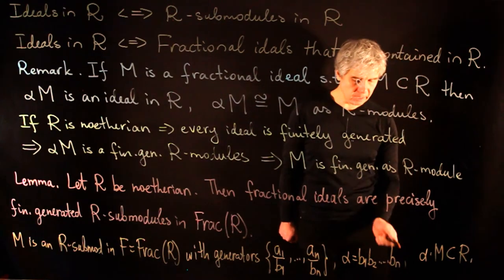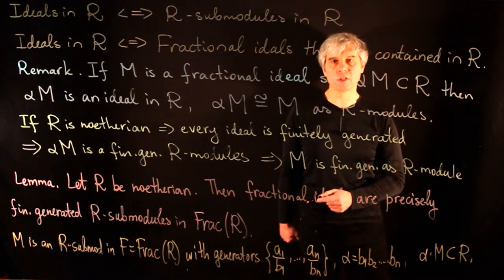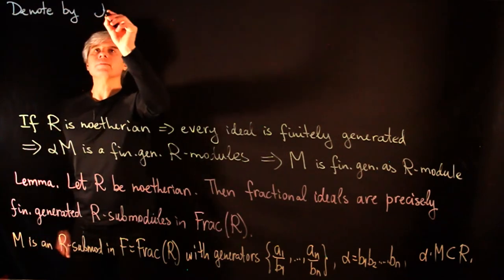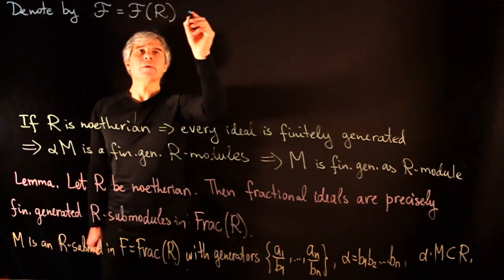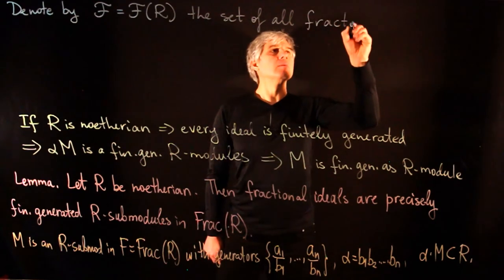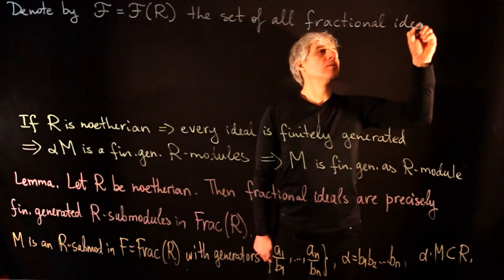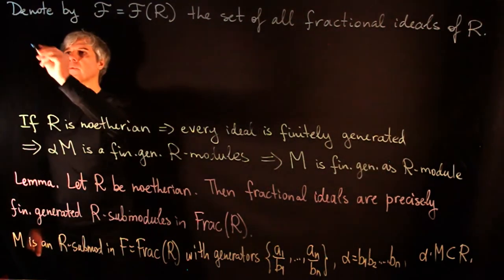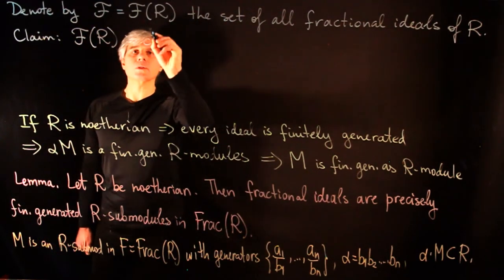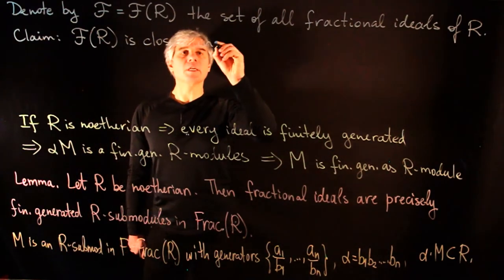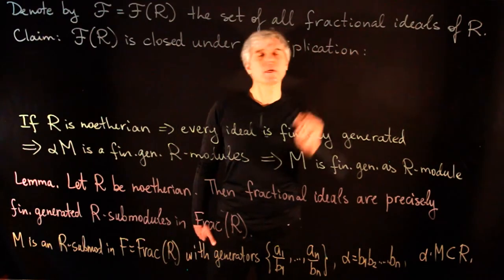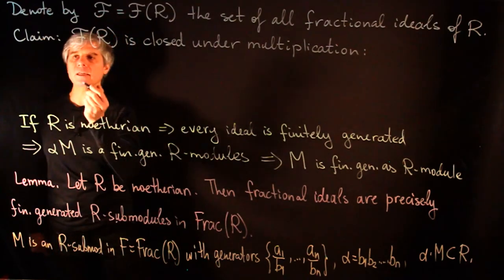So we can clear out all denominators by multiplying by the product of the denominators of the generators. Denote by F(R) the set of all fractional ideals of R. We make the following claim that F(R) is closed under multiplication — that is, the product of two fractional ideals is again a fractional ideal.